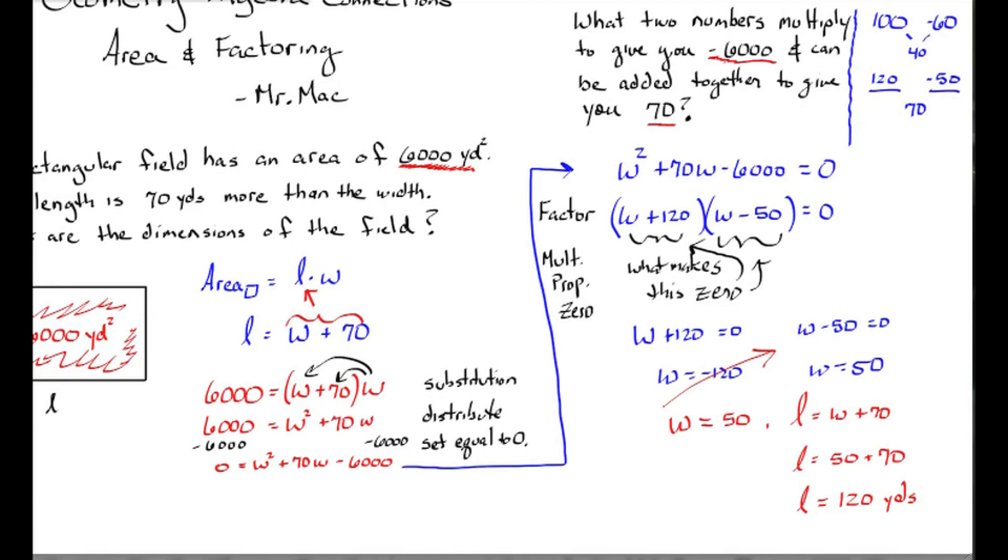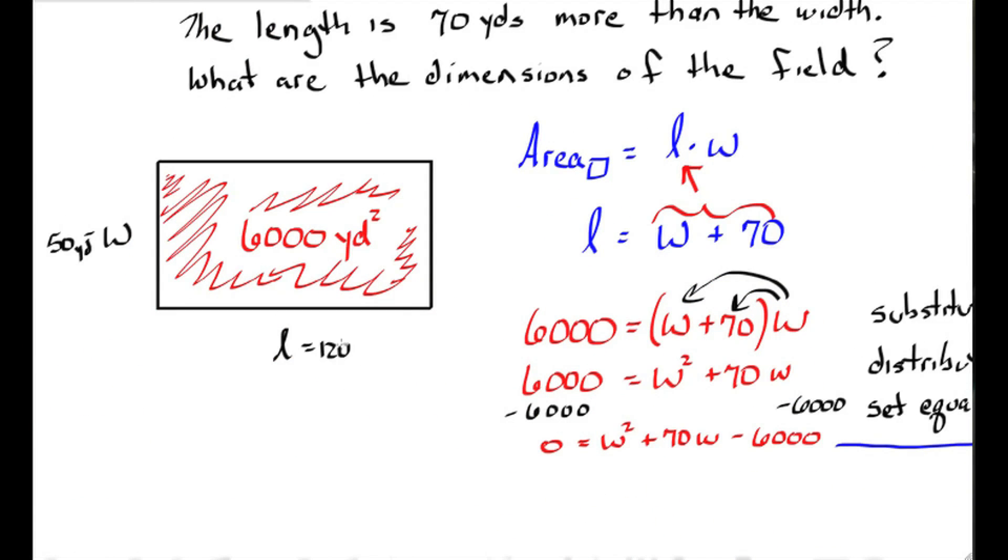So my length must be 50 plus 70, which is 120. 120 times 50 is 6,000, and there we have it, 6,000 yards squared. Have you figured out what kind of field this is?